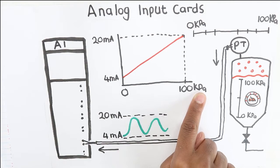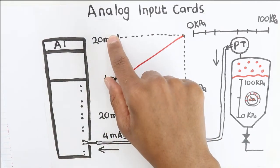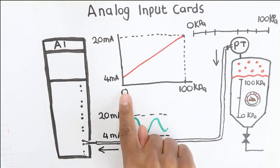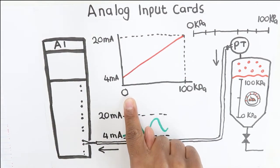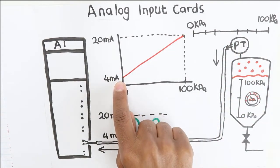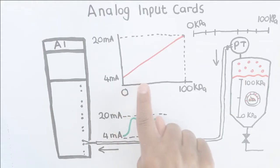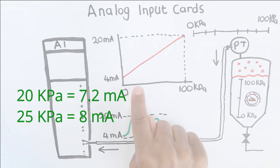If the pressure in the tank is equal to 0 kPa, the pressure transmitter will transmit a signal of 4 milliamps to the analog input card. If the pressure in the tank goes up to 20 kPa, the pressure transmitter will then transmit a signal of 8 milliamps to the analog input card.